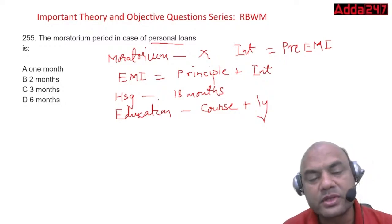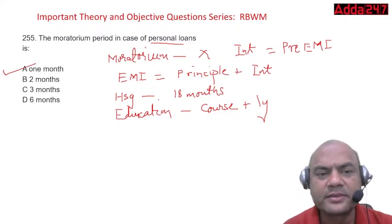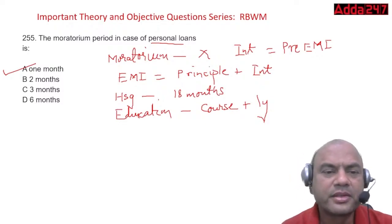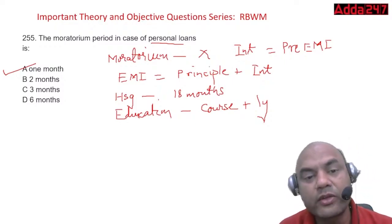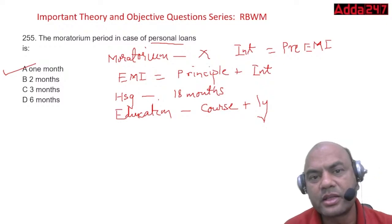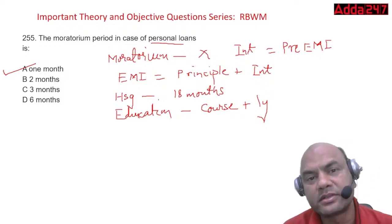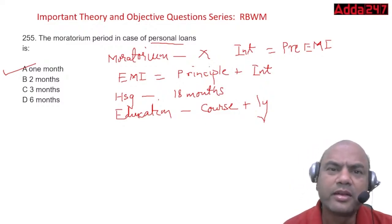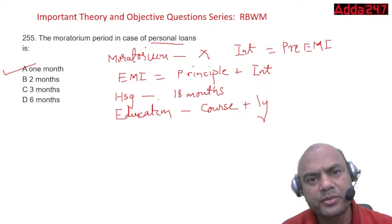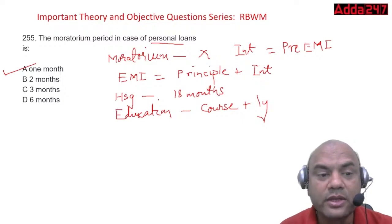However, in the exam the answer for personal loan moratorium will be one month, because the customer starts repayment after one month of disbursement. Similarly, second-hand housing, car loans — all have a one-month moratorium for exam purposes, though technically they are zero. For exam questions, answer one month.